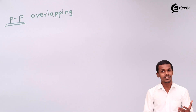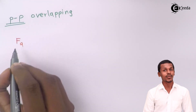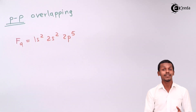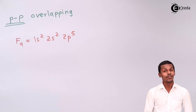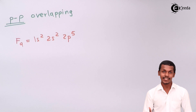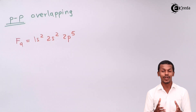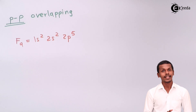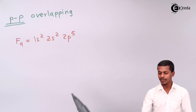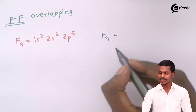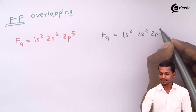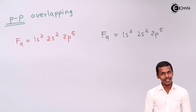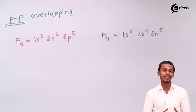Let us take the example of fluorine. Fluorine has an atomic number of 9, represented as 1s2, 2s2, 2p5. It has 5 valence electrons, but bond formation depends on valency, not valence electrons. Fluorine requires one electron to complete its octet. If fluorine combines with another fluorine (also 1s2, 2s2, 2p5) to form F2, both fluorine atoms need electrons to complete their octets, so sharing of electrons takes place.